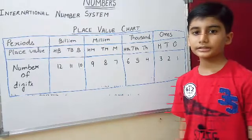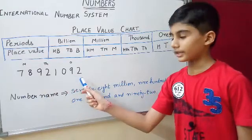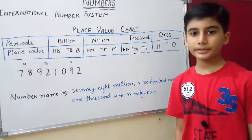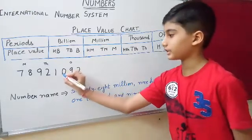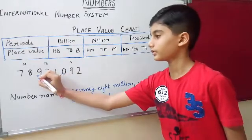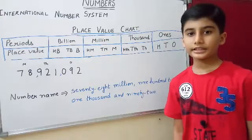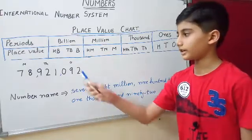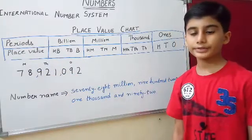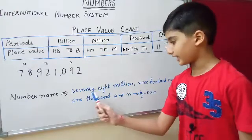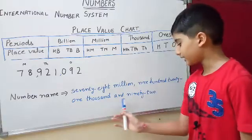Now let us see an example. The number is 7, 8, 9, 2, 1, 0, 9, 2 — that is 78,921,092. Now let us convert this number into standard form. We insert a comma after every three digits. The number is divided into three periods: ones, thousands, and millions. With the help of these periods we are able to write the number name: seventy-eight million, nine hundred twenty-one thousand and ninety-two.